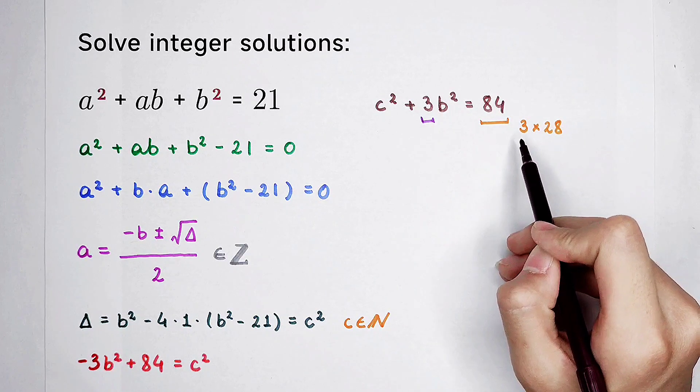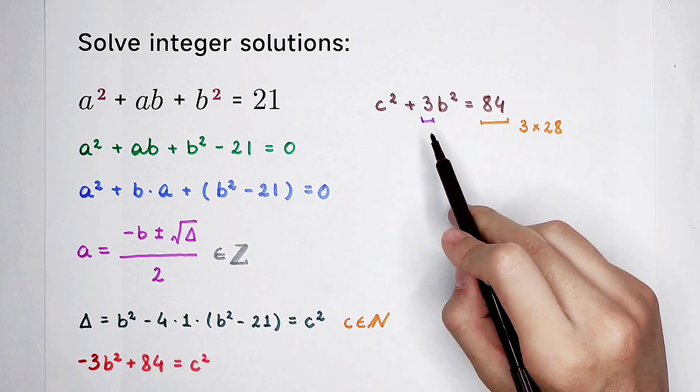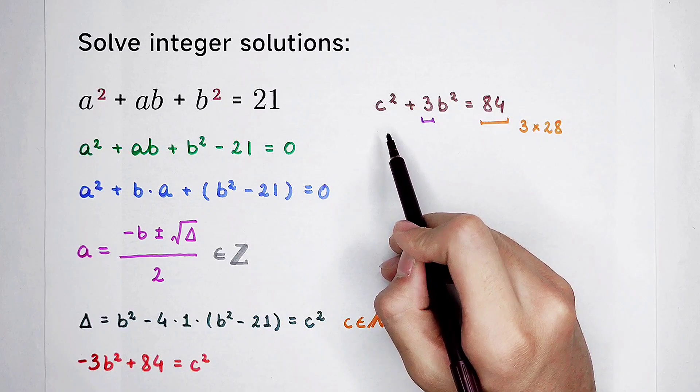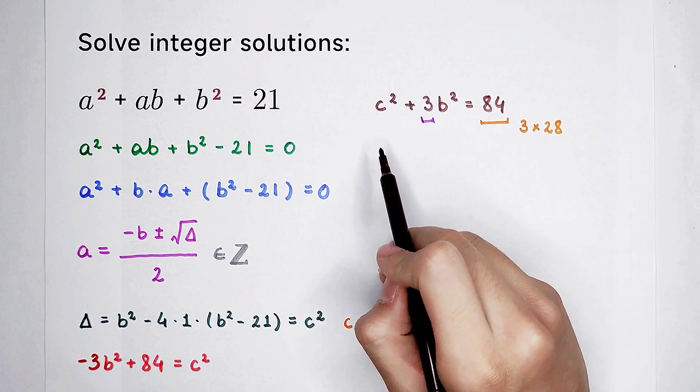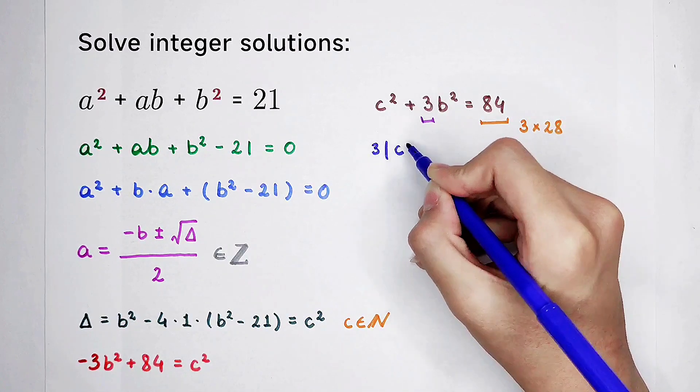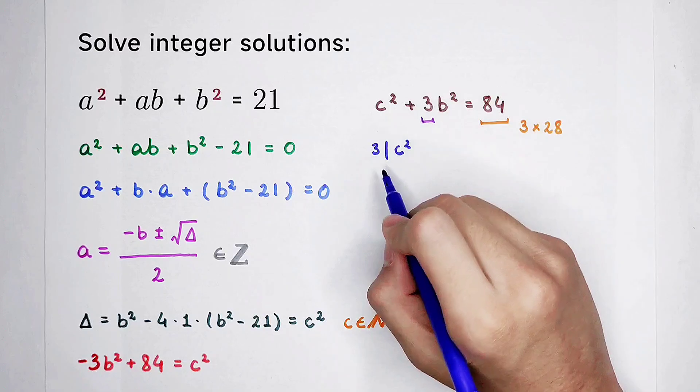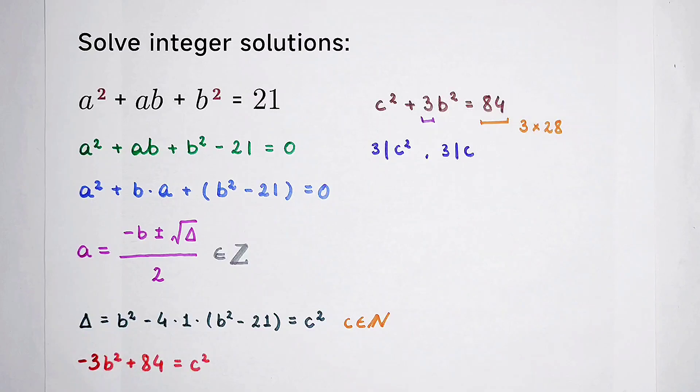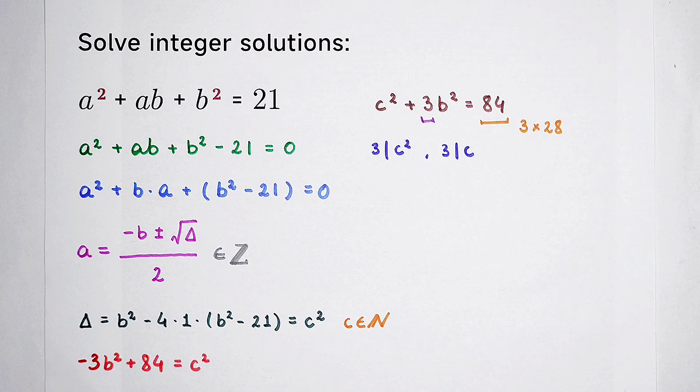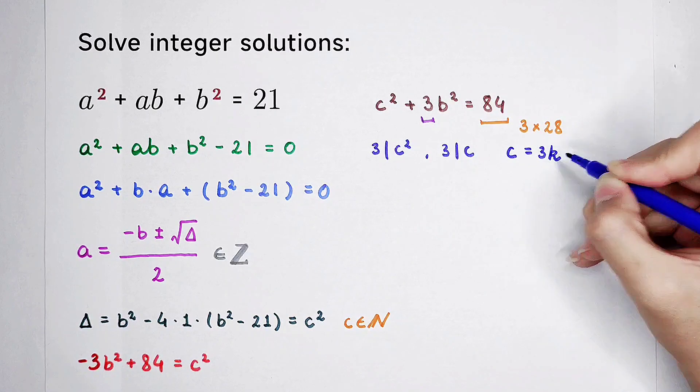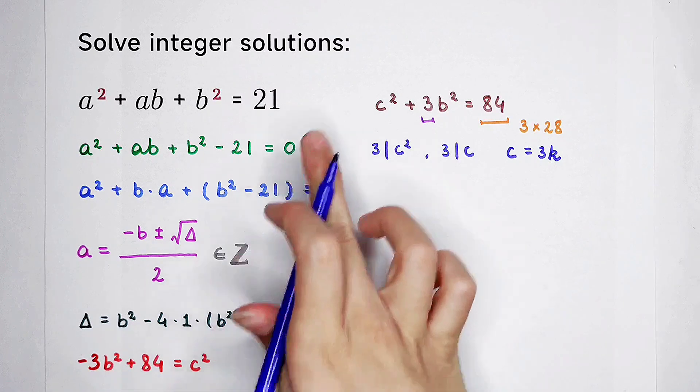Now, 84 is divisible by 3. 3 times b squared, divisible by 3. So, we can get that c squared is also divisible by 3. And if c squared is divisible by 3, then we can get c is also divisible by 3. Since 3 is prime, that c is equal to 3k.